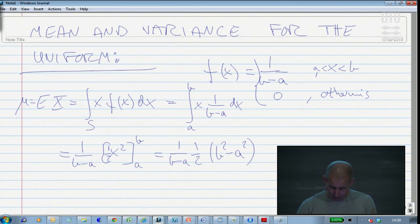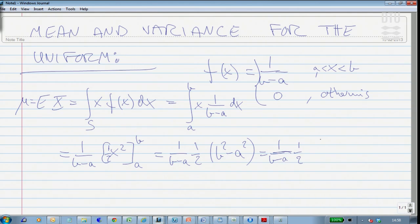Now b to the square minus a squared would equal b minus a times 1 half. That would be the sum of b plus a times the difference between b and a.